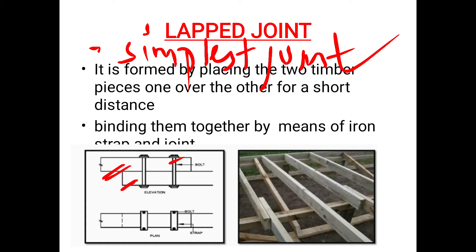Two pieces overlap and then are bound with a bolt. The two timber pieces are bound. We use an iron strap with the second figure. By means of binding them with an iron strap, we secure the lapped joint. We overlap the last timber piece and use a bolt.